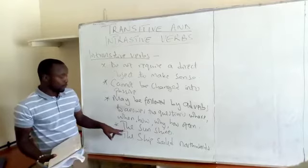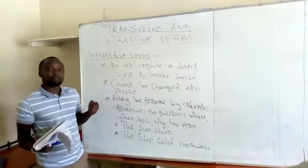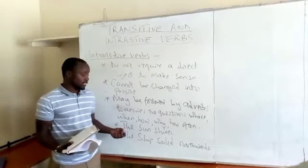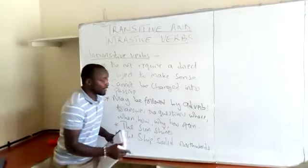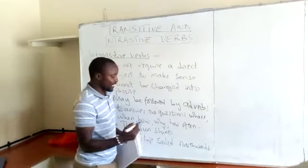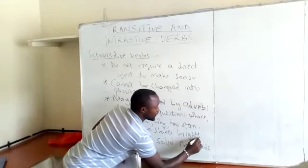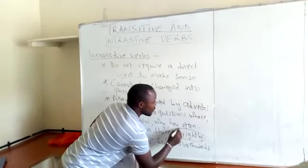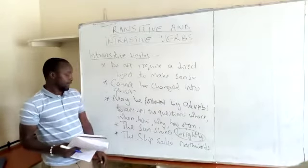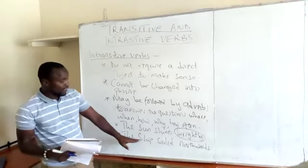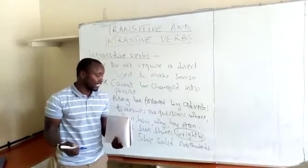For example, if I was to say 'the sun shines,' that sentence is making a complete thought and it is making sense — you don't have to add anything. However, you might decide to explain how the sun shines, and you say 'brightly.' This is not mandatory, but you can add it to answer the question how. Then you can just say 'the ship sailed,' and the sentence is making complete sense at that juncture.